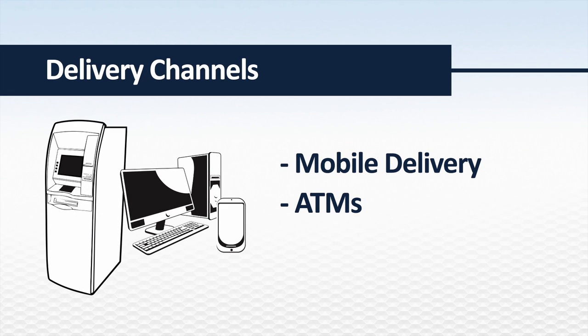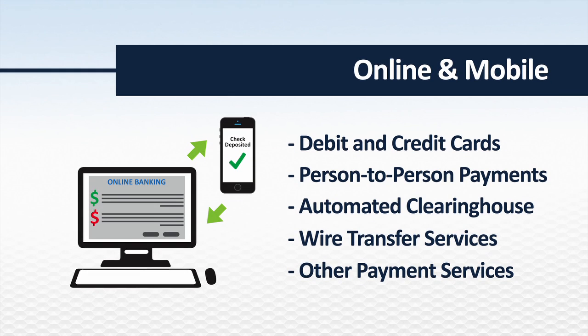Delivery channels address whether products and services are available online, through mobile delivery, or ATMs. Payment services like debit and credit cards, person-to-person payments, automated clearinghouse, wire transfer services, and other payment services — all of these credit union services may pose a higher inherent risk.